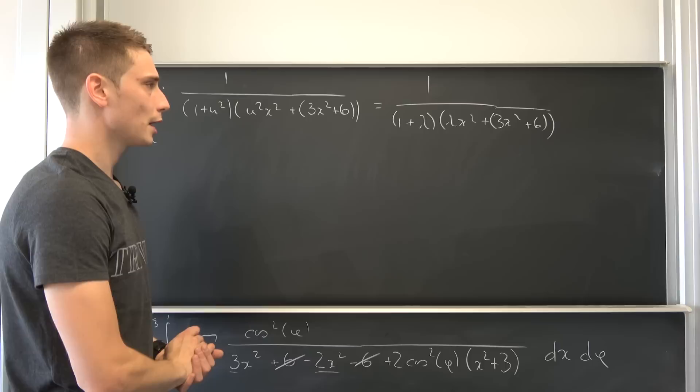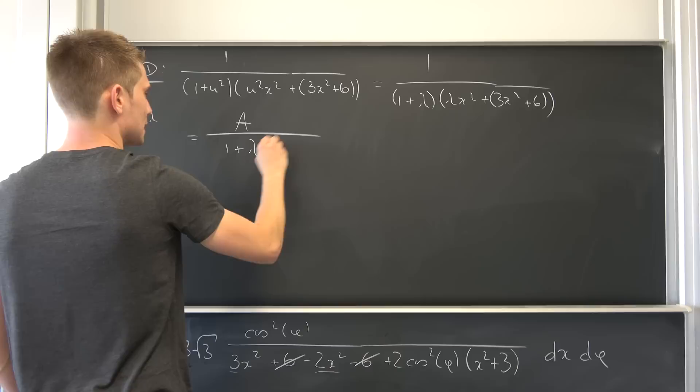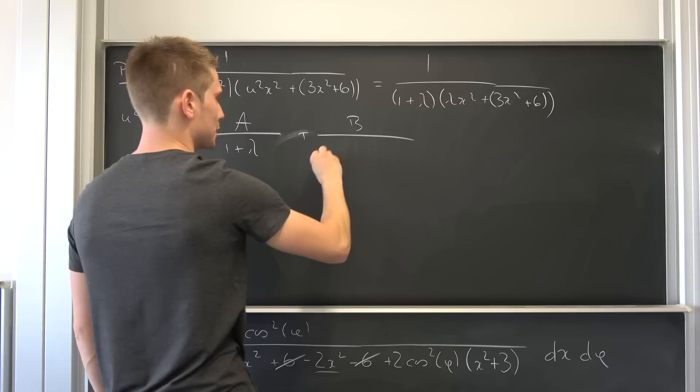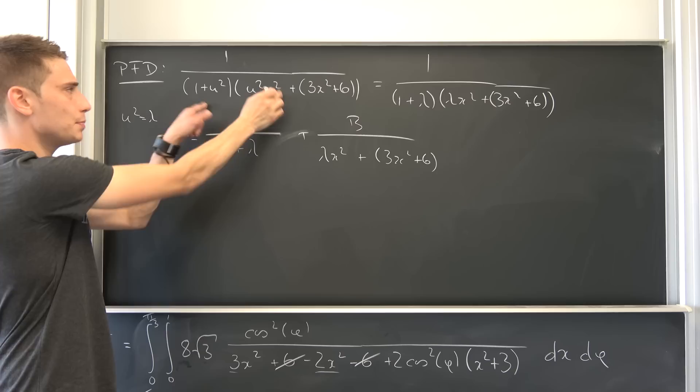And now we can do regular partial fraction decomposition. So this is equal to, for example, A over 1 plus lambda plus B over this chunk right here, lambda x squared plus 3x squared plus 6. And now we can just multiply both sides by this big denominator right here.